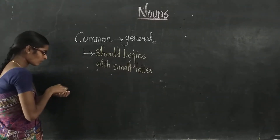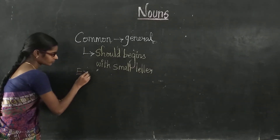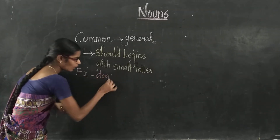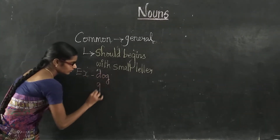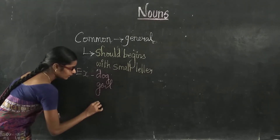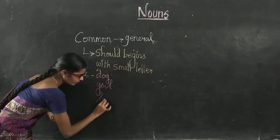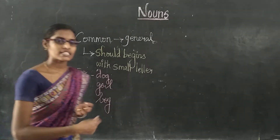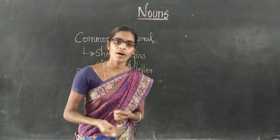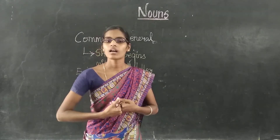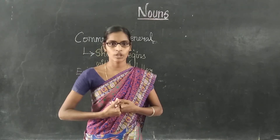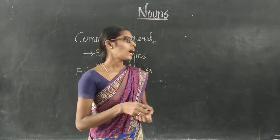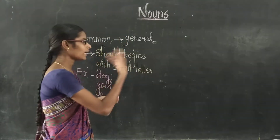Examples for Common Noun: Dog, Girl, Boy, Fan, Teen, Mobile. These are all called Common Nouns — these are all general names.